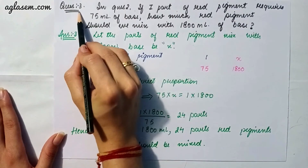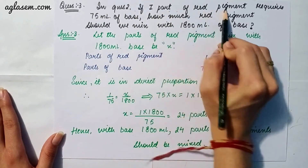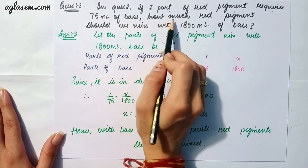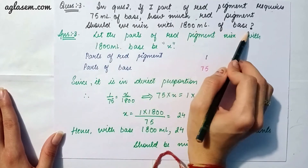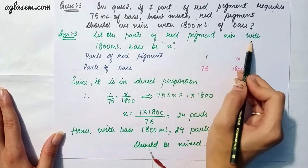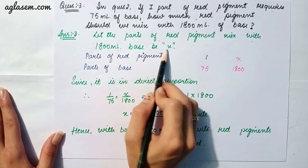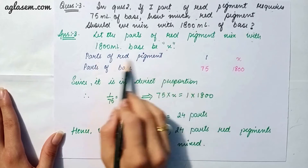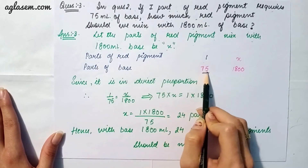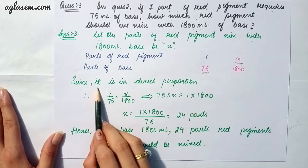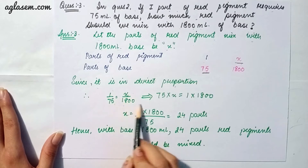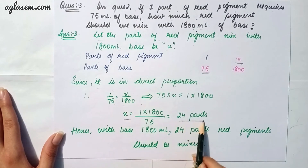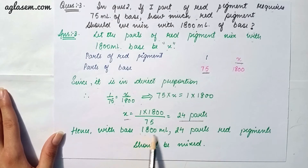Question 3: If 1 part of red pigment requires 75 ml of base, how much red pigment should be mixed with 1800 ml of base? Let the part of red pigment mixed with 1800 ml base be x. This is a direct proportion, so 1/75 = x/1800, giving x = 24 parts. So with 1800 ml of base, 24 parts of red pigment should be mixed.